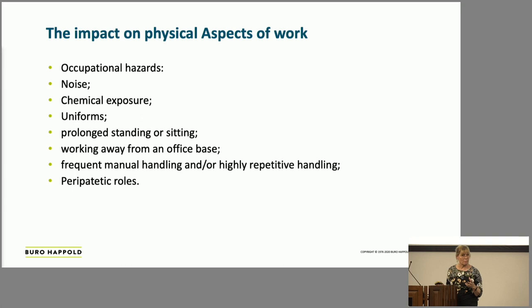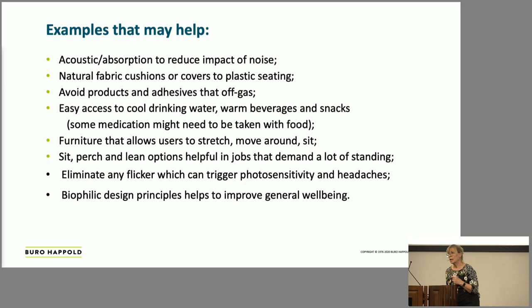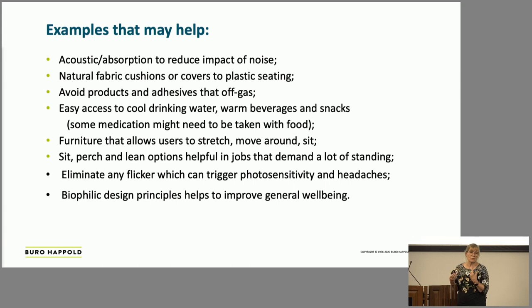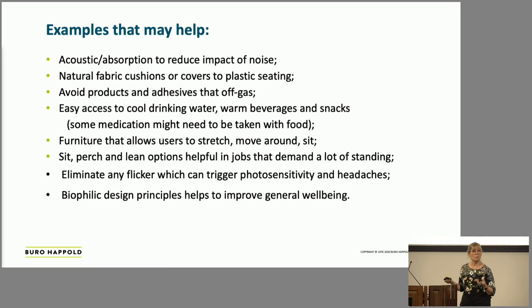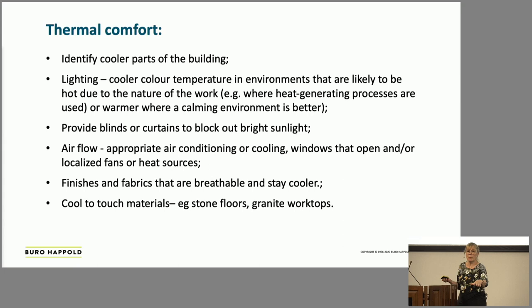Some examples that may help when considering the built environment include improving acoustics. At difficult times of the month, we can become hypersensitive to noise in the same way that someone with a neurodivergent trait might be, causing increased headaches from flicker. We can become much more sensitive to our environment — a much more sensitive sense of smell. Certain smells can make people very nauseous. So the products we put into buildings matter — even when buying a carpet, choosing one that won't off-gas and make everyone feel ill.